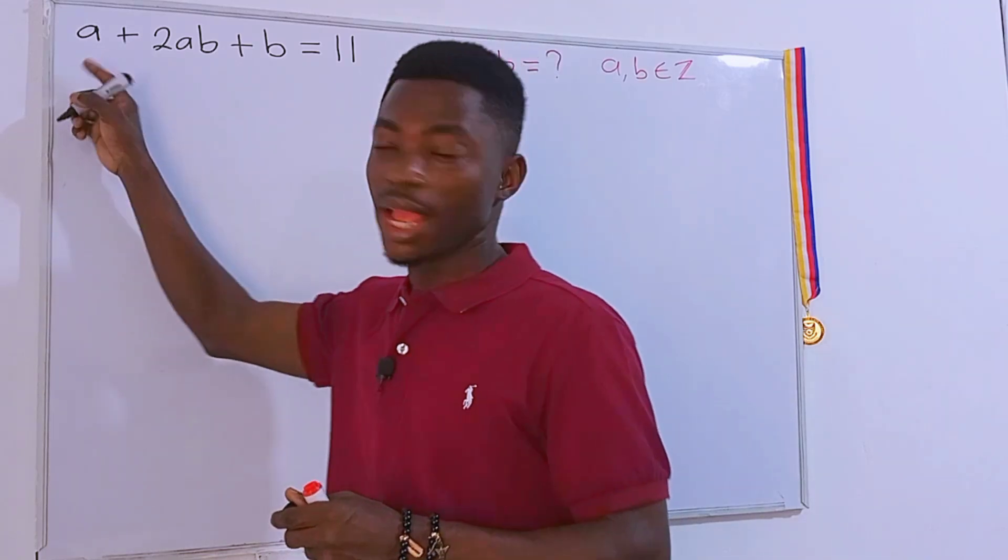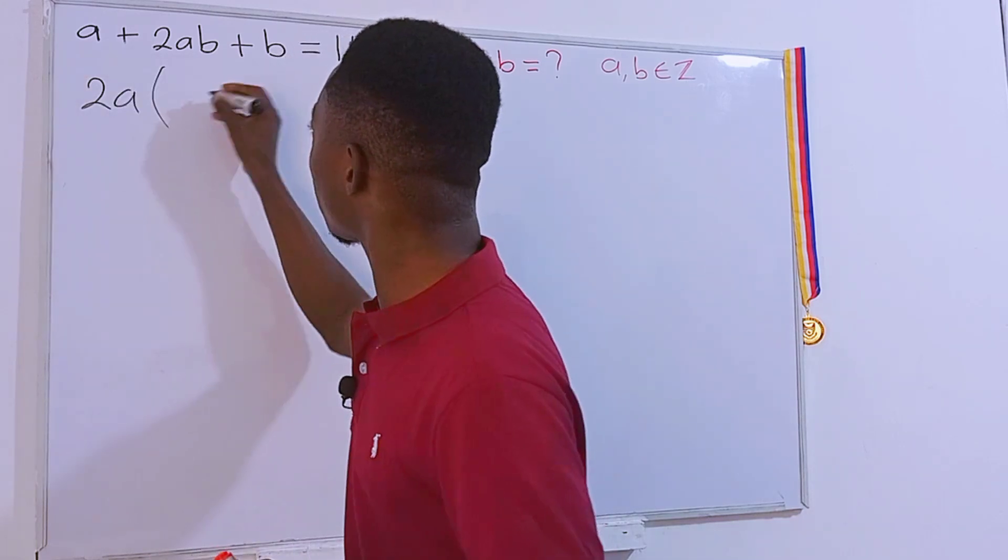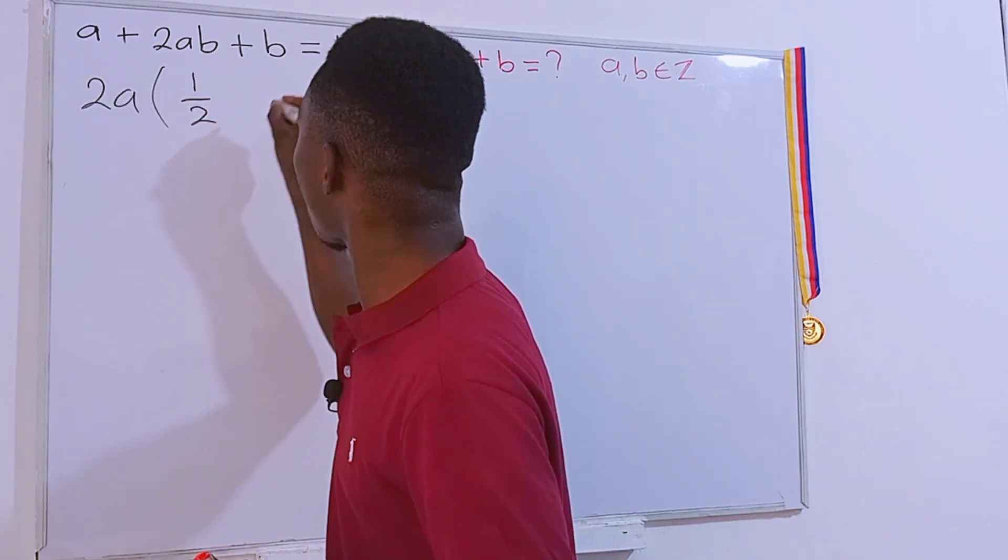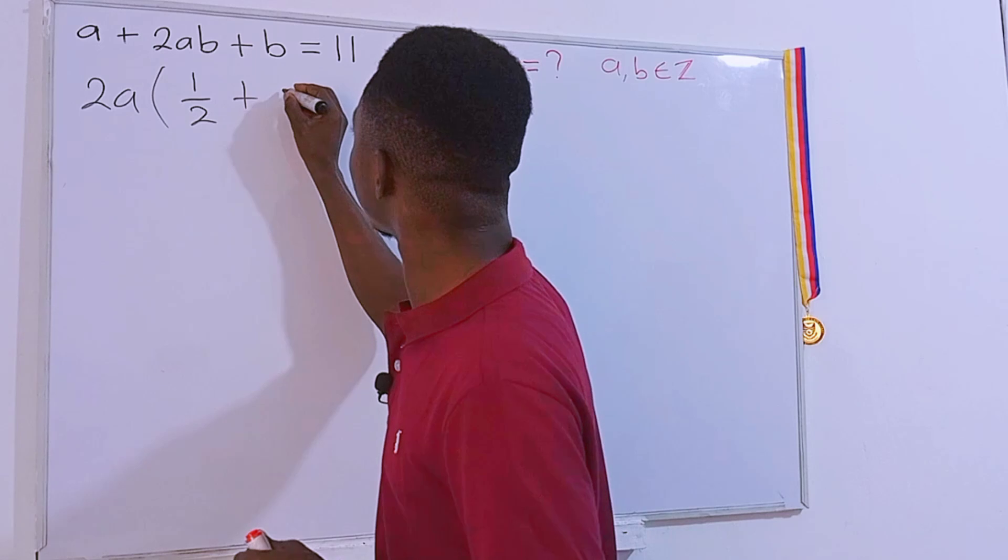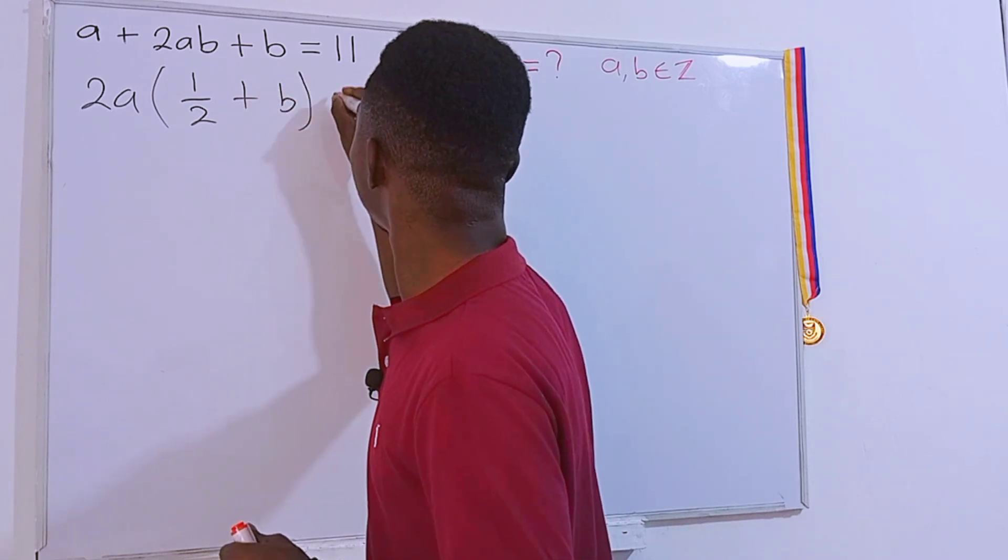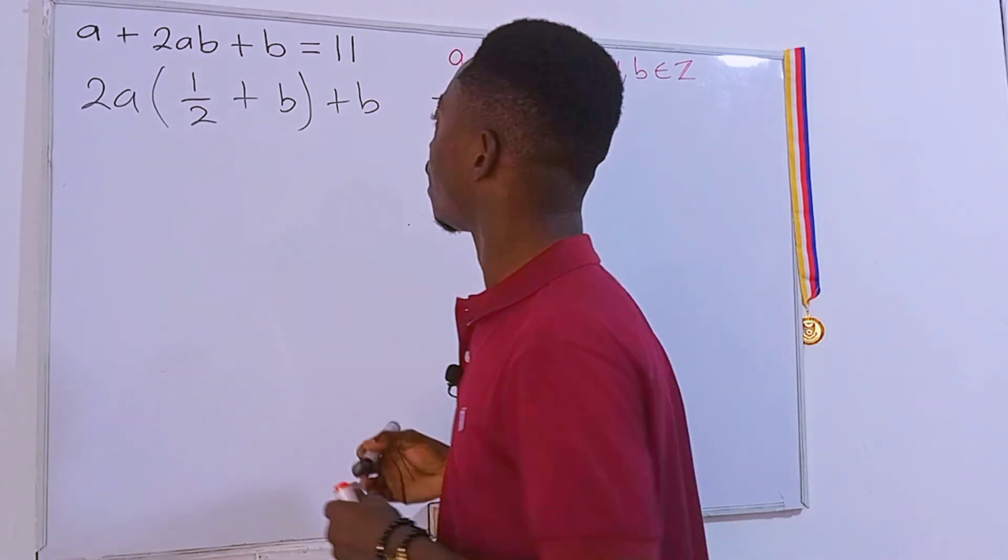Let's do this instead. Instead of factoring out a, I'm gonna factor out 2a so that right here we'll be left with 1/2, then plus here 2ab divided by 2a will be left with just b, then plus b here, and this is equal to 11.